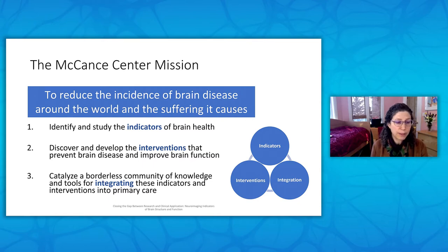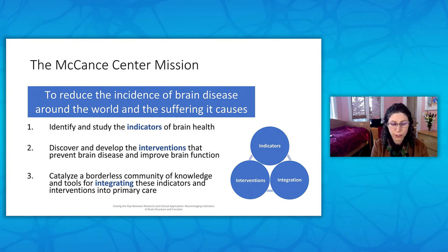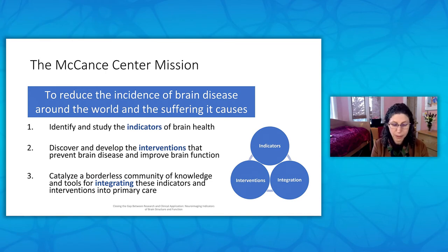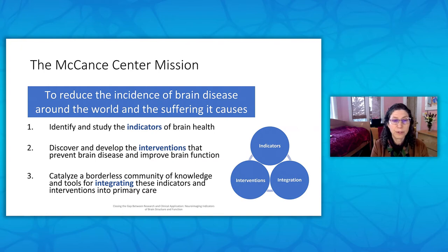We do this in multiple ways, one of which is to identify and study indicators — for example, the structural and functional imaging metrics of brain health. We need these indicators to help discover and develop treatments to prevent brain disease and improve brain function. For example, being able to identify and quantify a positive impact of improved diet, better sleep habits, or more exercise can help motivate people to change their habits. We will know we have been successful when we have catalyzed integration of these indicators and interventions into primary care so as to meaningfully reduce brain disease.